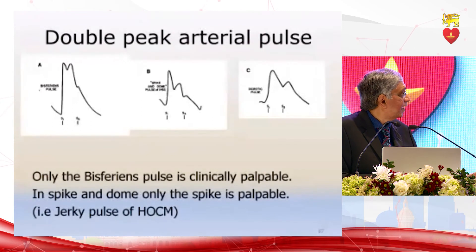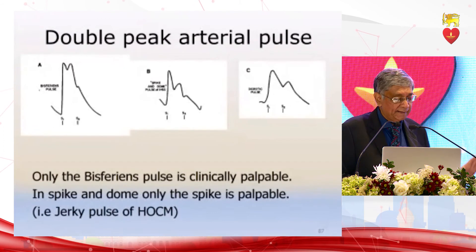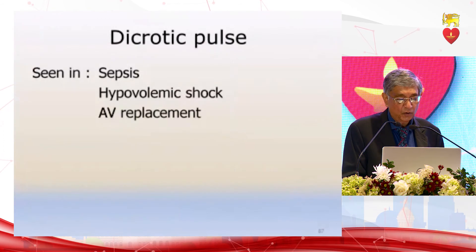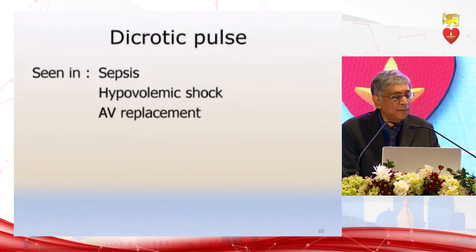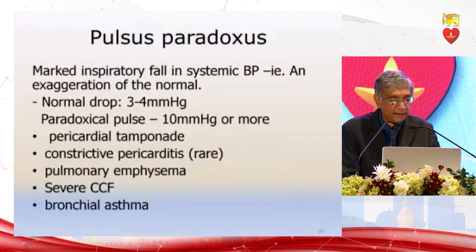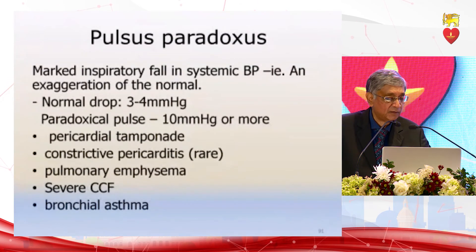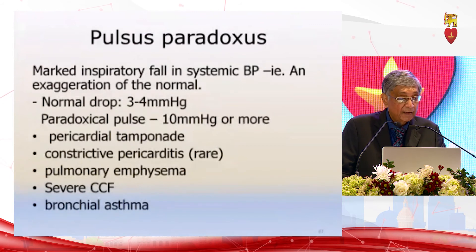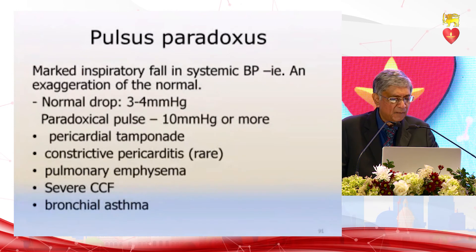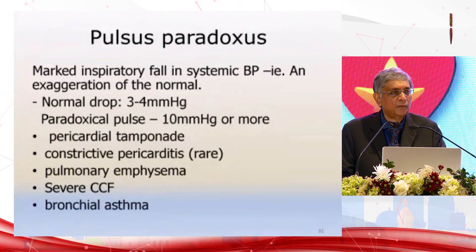In HOCM, the pulse has a spike and dome configuration, but the dome cannot be palpated — therefore you feel only the spike, giving the jerky pulse. The dicrotic pulse is broader than the bisferiens pulse and is seen in low-volume states indicating shock — septic shock or hypovolaemic shock. The pulsus paradoxus is important because of its association with the life-threatening condition of pericardial tamponade, in which there is a marked inspiratory fall in systemic blood pressure.